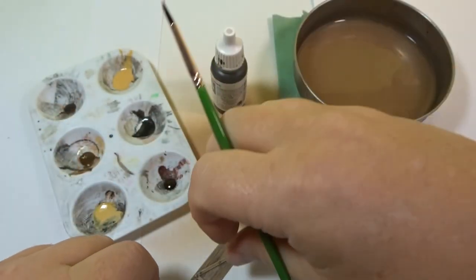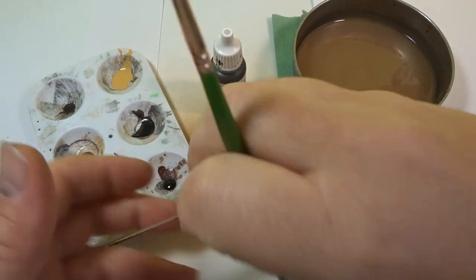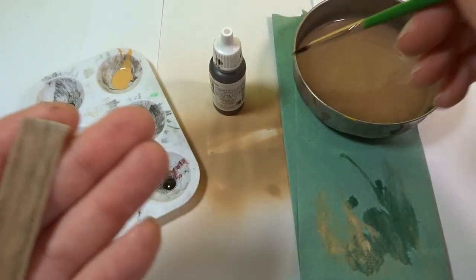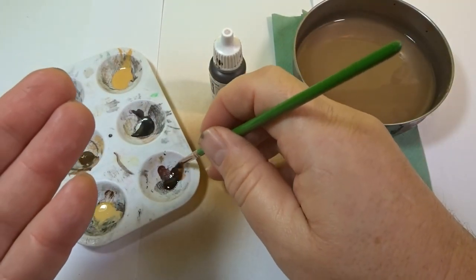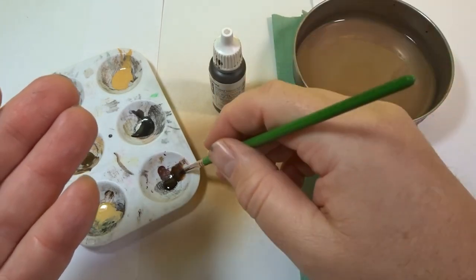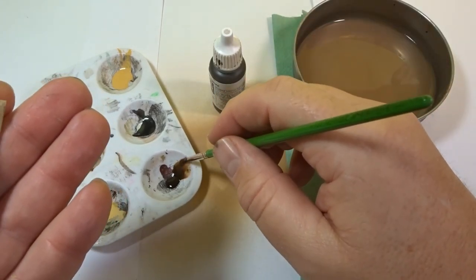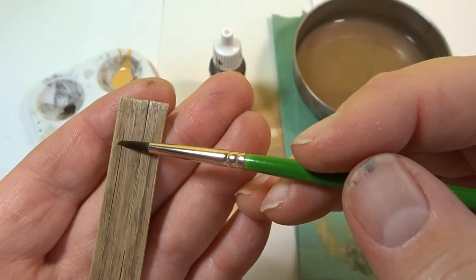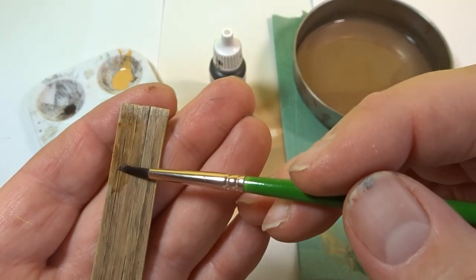Now what we want to do is bring all of those colors together. So using smoke we'll create a wash and cover the whole of the fence panel with it. And just to recap, all of the acrylic paints used were from Vallejo.